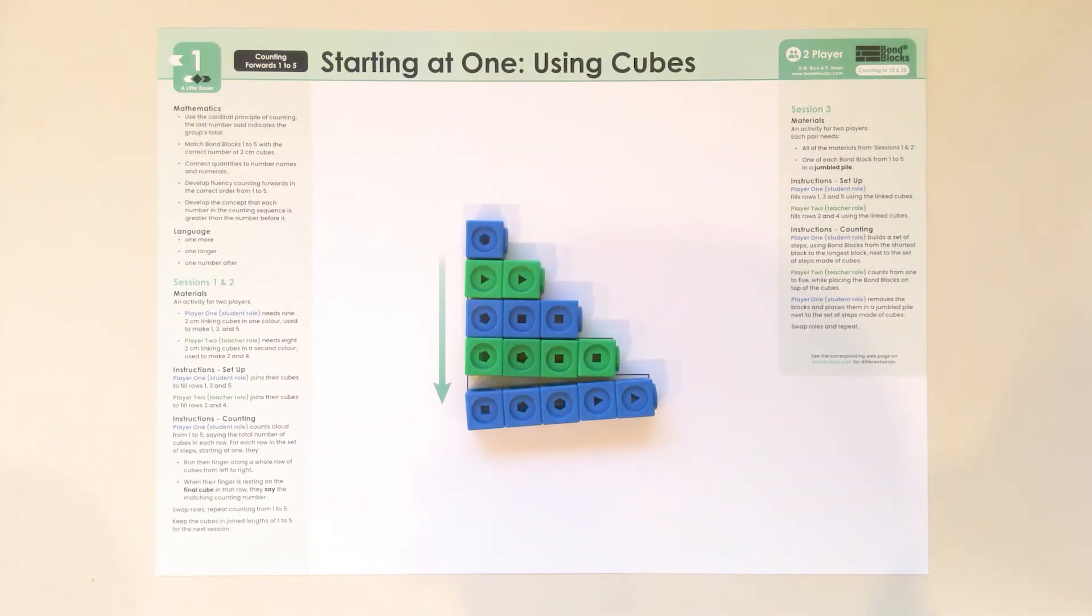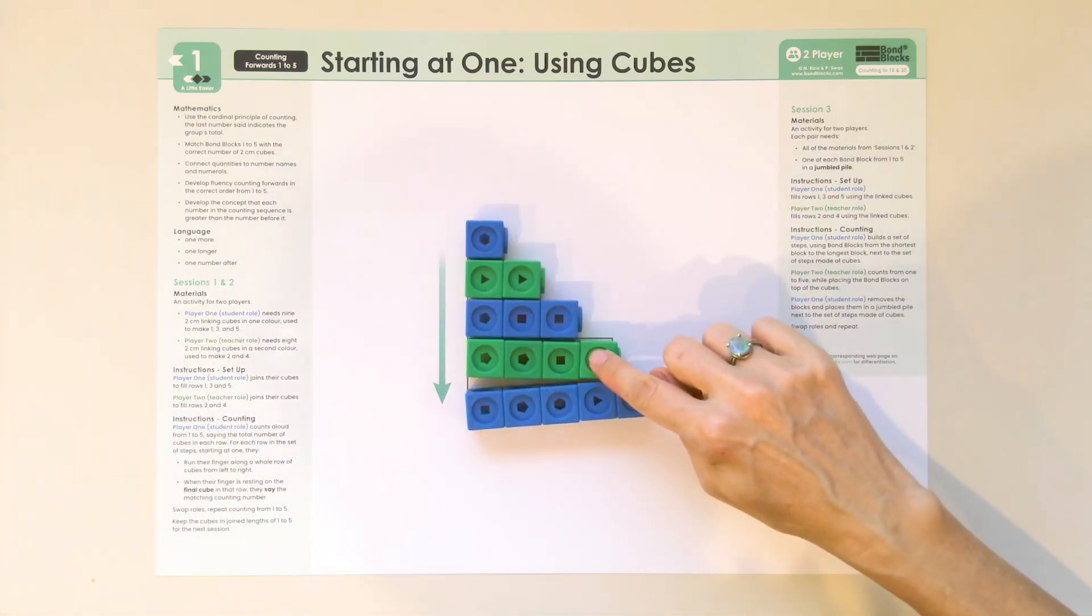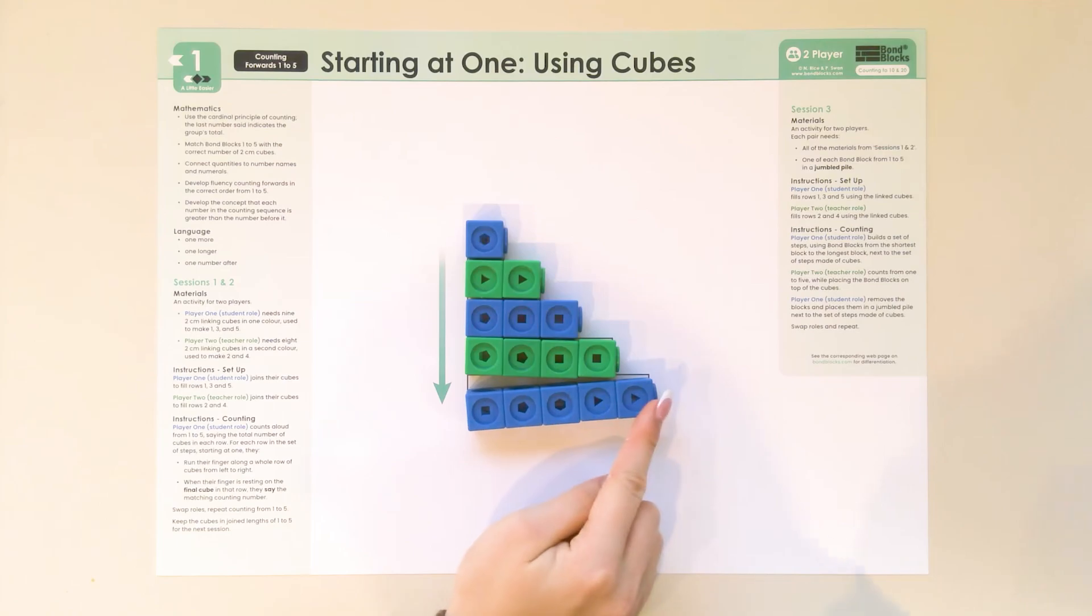Karis, we want to make this a little harder. We could take turns. Can you say the first one? One. I'll do the next row. Two, three, four, five.